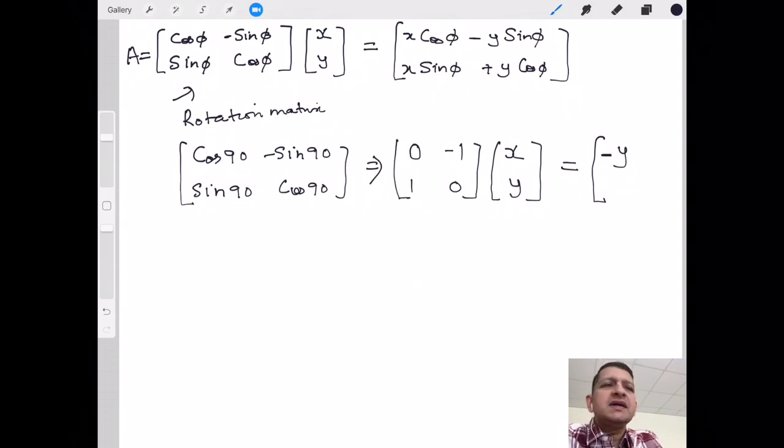So you will observe that x, y has now changed to -y and x. Let's take an example: for x and y, say x is 1, y is 2, so that's a point.